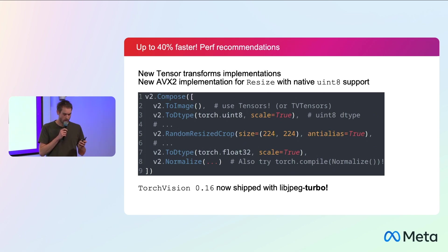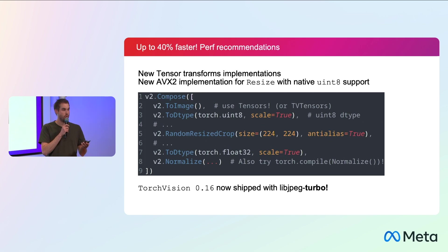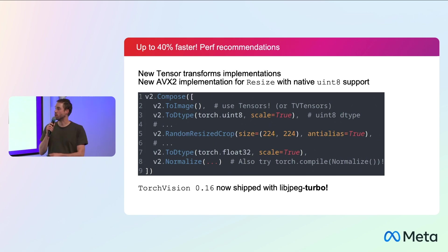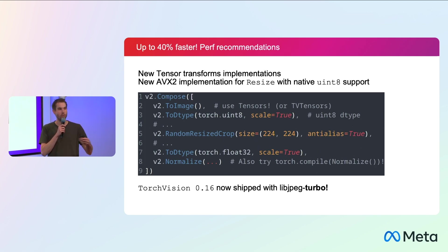Even if you only care about classification or transforming single images, we still recommend trying the new transforms because you should expect some speed-ups. We have completely rewritten their implementation even for pure images. In particular, we rewrote the resize transform, which used to be the bottleneck of typical small classification pipelines — it can now handle uint8 type instead of just float, making it much faster. We also have performance guidelines in our documentation. Additionally, we now build against libjpeg-turbo instead of libjpeg, so you can expect speed-ups on decoding as well.